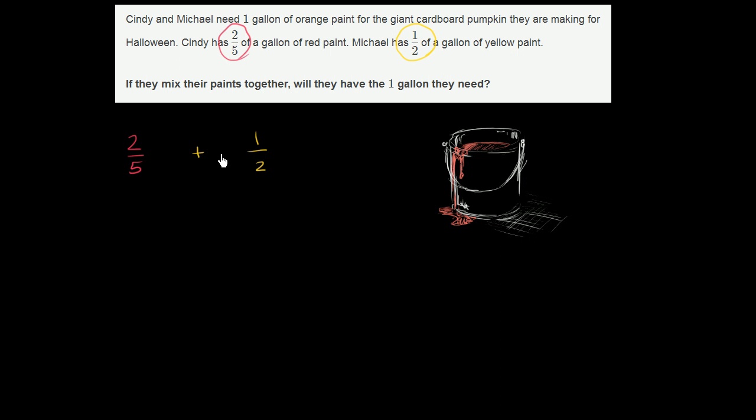So whenever we add fractions, right over here, we're not adding the same thing. Here we're adding two-fifths. Here we're adding one-half. So in order to be able to add these two things, we need to get to a common denominator.